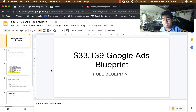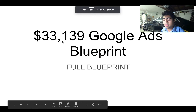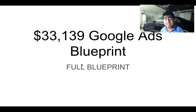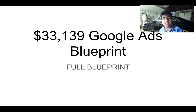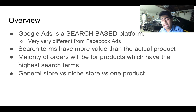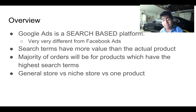Now that we've gone over these numbers, without wasting any more time, let's go into the Google Slides I've created for you guys so we can go further into the specific strategies. So the $33,139 Google Ads blueprint — this is going to be a full A through Z blueprint, so stick till the end. And before I get into this, if this is the first time you're watching one of my Shopify videos, don't forget to hit that subscribe button so you stay up to date with quality videos like this one.